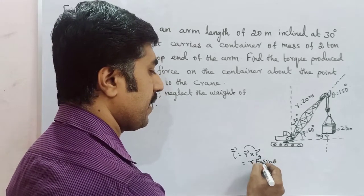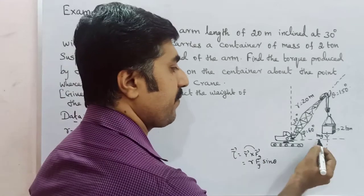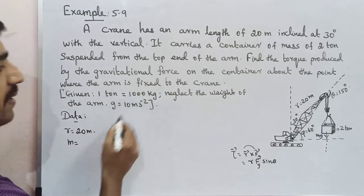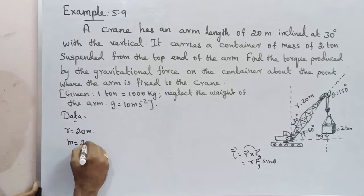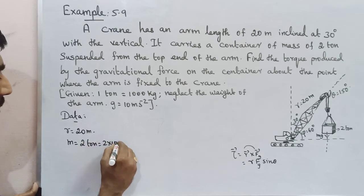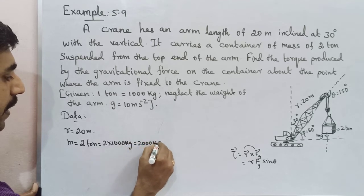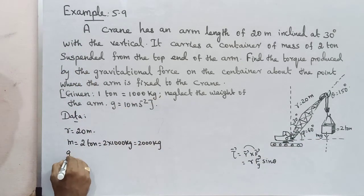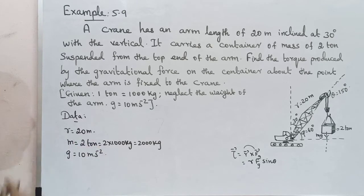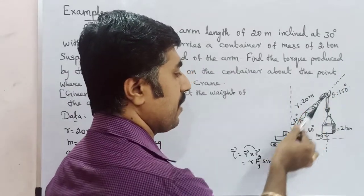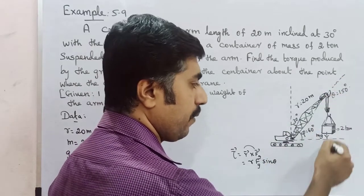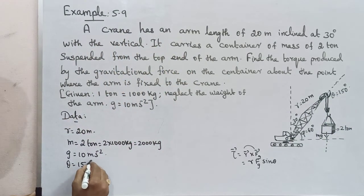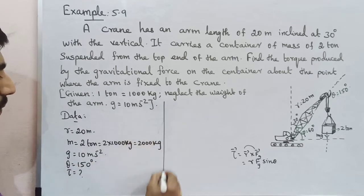The gravitational force formula is F_G = mg. Mass M is equal to 2 tons. 1 ton equals 1000 kg, so 2 tons equals 2000 kg. G value is 10 m/s². Theta, the angle between the position vector R and force, is equal to 150 degrees. Now calculate the torque.